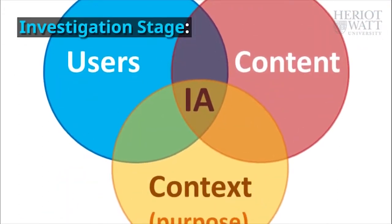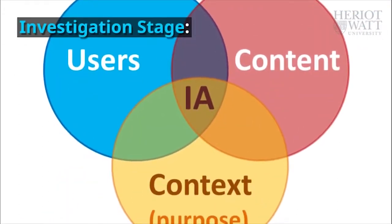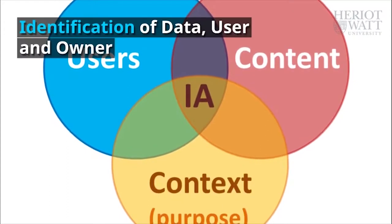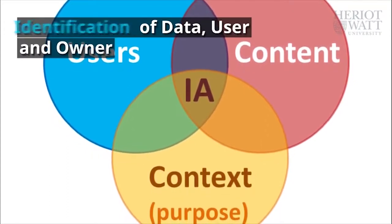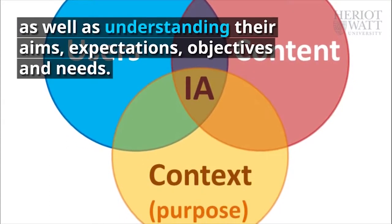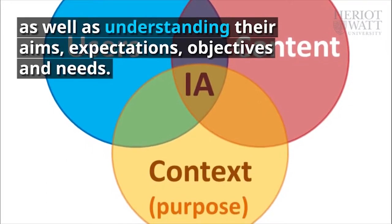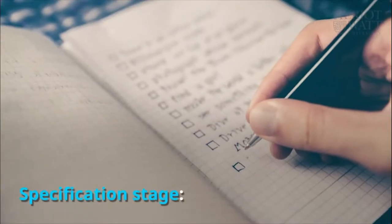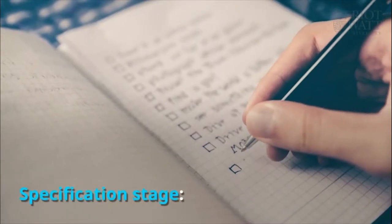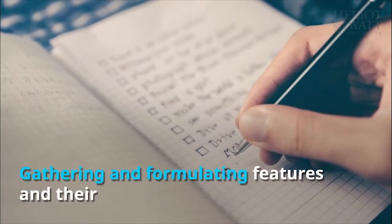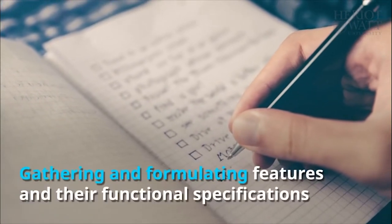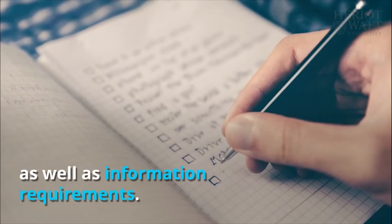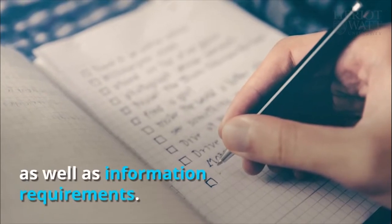Investigation stage: identification of data, user and owner, as well as understanding their aims, expectations, objectives and needs. Specification stage: gathering and formulating features and their functional specifications as well as information requirements.